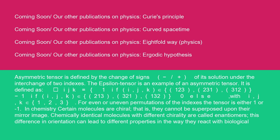In chemistry, certain molecules are chiral. That is, they cannot be superposed upon their mirror image. Chemically identical molecules with different chirality are called enantiomers. This difference in orientation can lead to different properties in the way they react with biological systems.